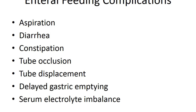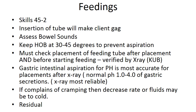Please refer to table 45-7 in your text on internal tube feeding complications. For inserting a nasal enteric tube, review the yellow pages beginning on page 1076–1085. Insertion of a tube will make the client gag. Assess bowel sounds prior to placement — absence of bowel sounds may indicate GI problems and is a contraindication to feeding. You will also need to test gastric pH.